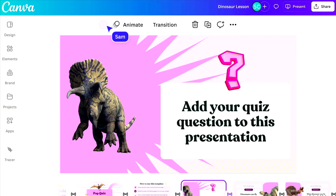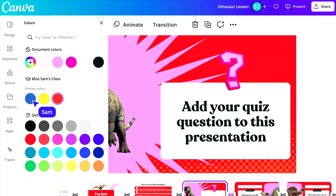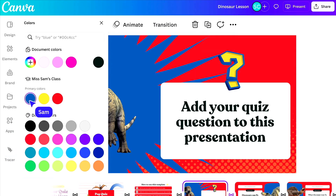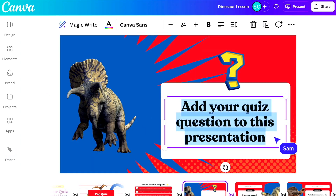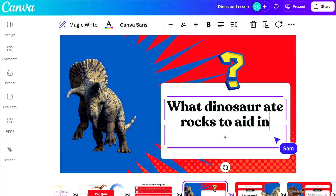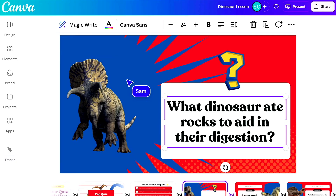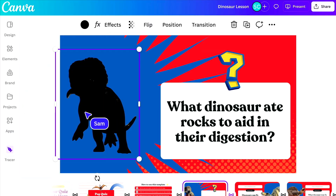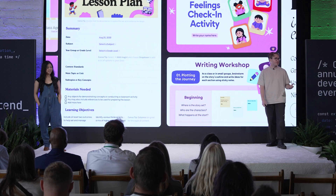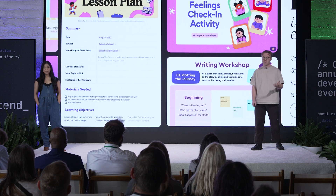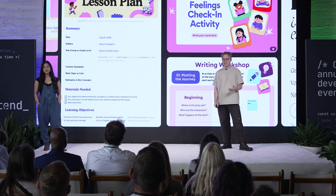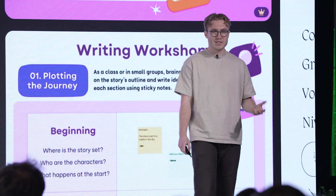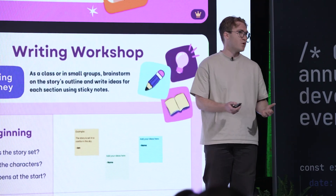He then starts the design process by updating the colors in the template, and then tailoring the questions on the presentation to his class. But something's missing — he needs a fun way to engage better with his students. So Sam opens the Tracer app to create some fun visuals for the pop quiz at the end of class, so that his students can team up and compete on Who's That Dinosaur. Teachers like Sam are always looking for innovative ways to create more engaging and compelling content for their students, leveraging Canva at every stage of their workflows.